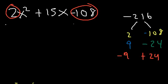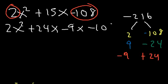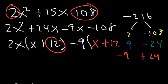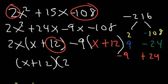So we replace 15x with 24x and negative 9x. Factoring by grouping: take out 2x from the first two terms — 2x squared divided by 2x is x, and 24x divided by 2x is 12. Take out negative 9 from the last two terms — negative 9x divided by negative 9 is x, and negative 108 divided by negative 9 is positive 12. The common term is x plus 12, and the other factor is 2x minus 9. So the factored form is (x plus 12)(2x minus 9).